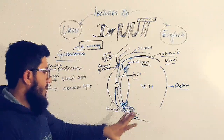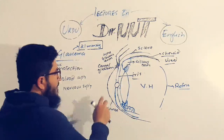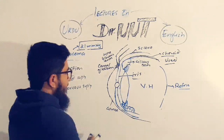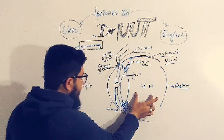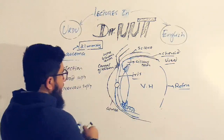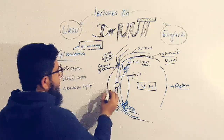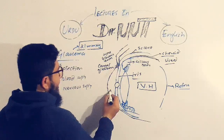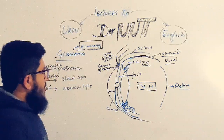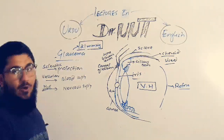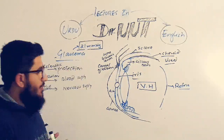The eye also has two chambers and two types of fluid. The posterior chamber contains vitreous humor, and the anterior chamber contains aqueous humor. Now let's move to what happens in glaucoma.